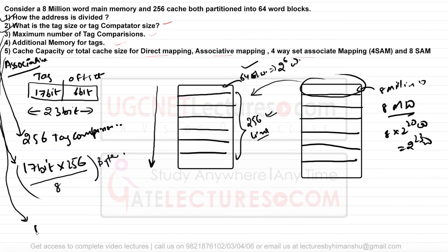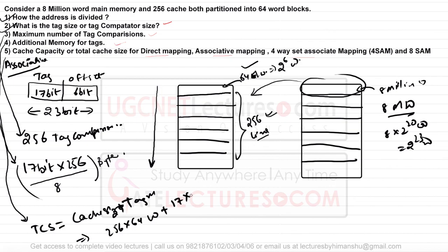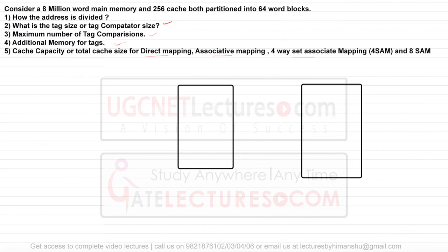Total cache size for associative mapping = cache size + tag memory. We are not using dirty bits, so: total = 256 × 64 words + 17 × 256 bits. Divide by 8 to convert bits to bytes if needed, considering word size and byte size are the same.